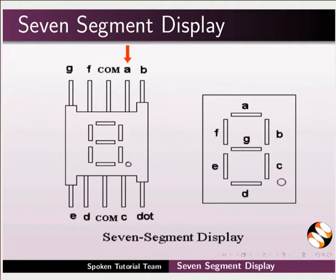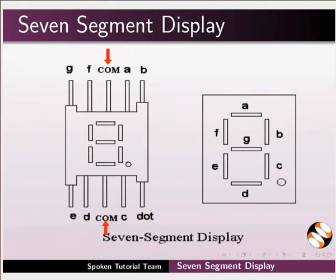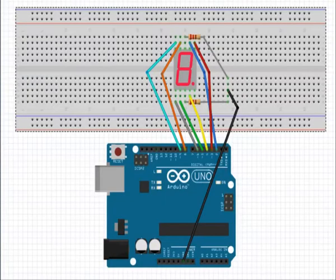In the common anode display, pins A, B, C, D, E, F, G, and dot must be connected to plus 5 volts. Now, let us see the connection circuit details. In this experiment, we will be using the common cathode 7-segment display.